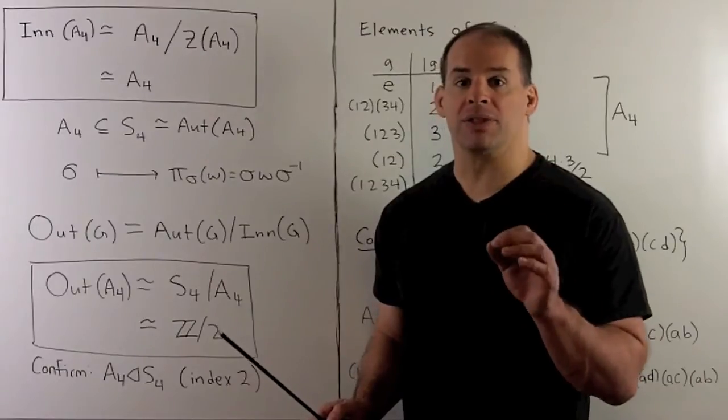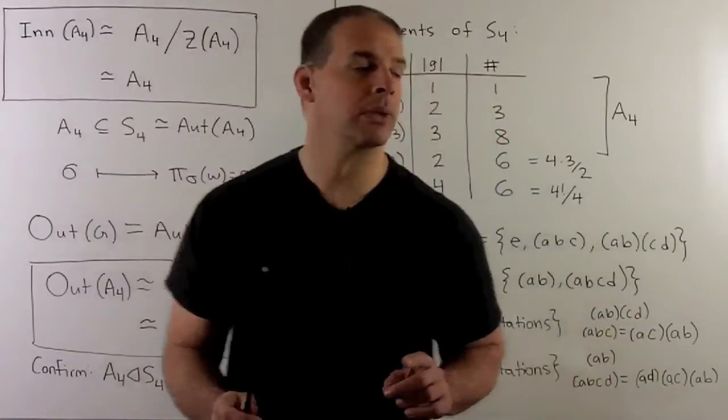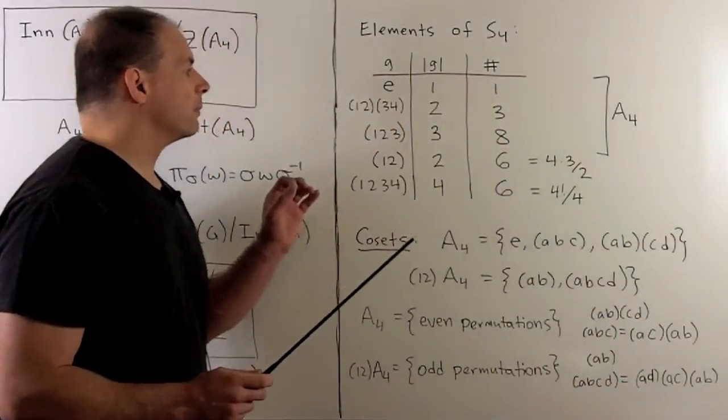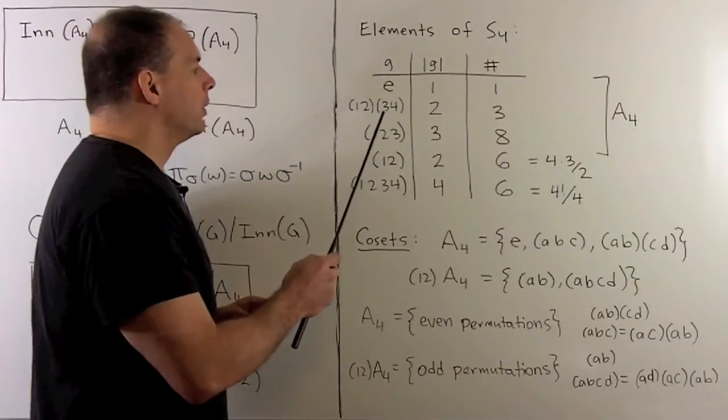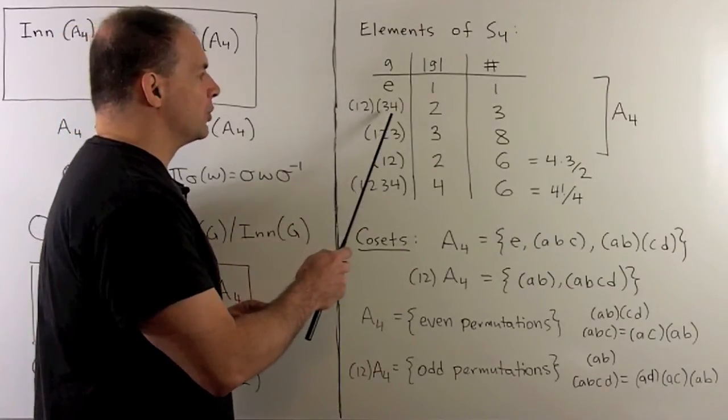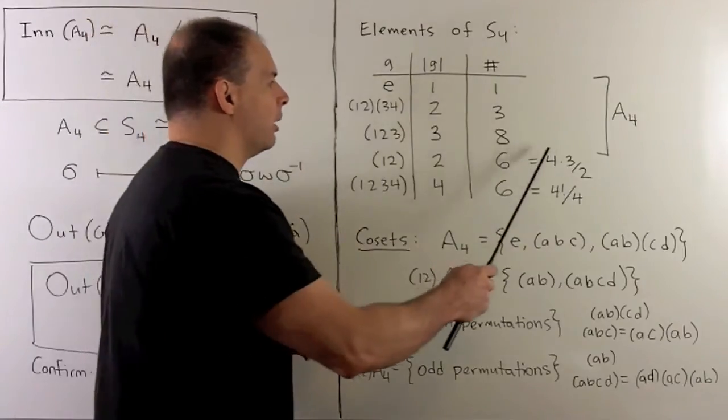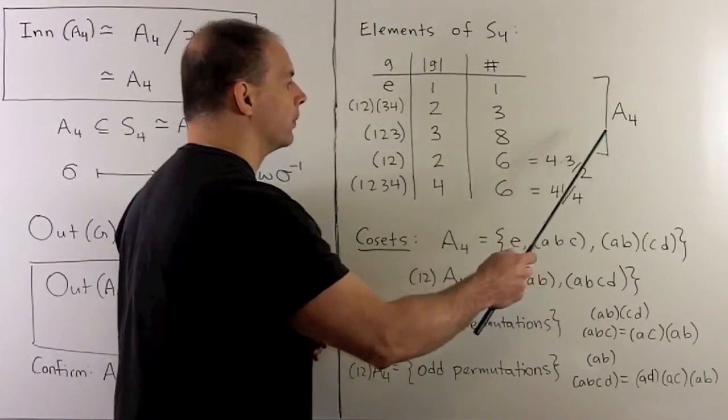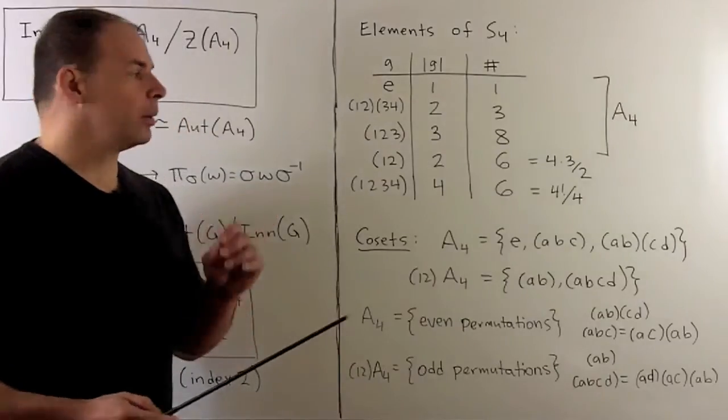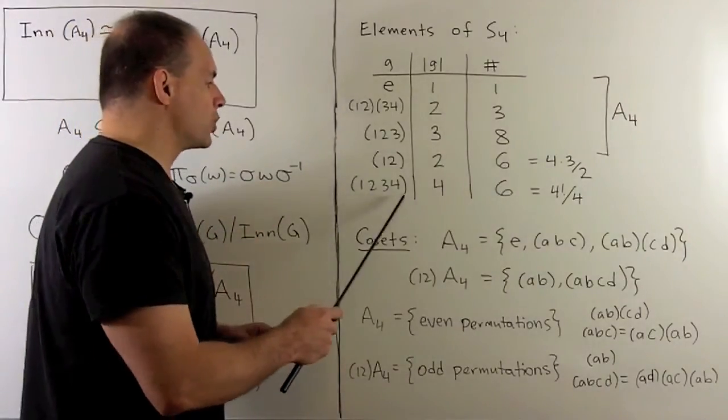Let's take a closer look at the elements of S4. We have the identity element. For the remainder we have products of disjoint two cycles and three cycles, and these give us the elements in A4. For the remainder we have two cycles and four cycles.